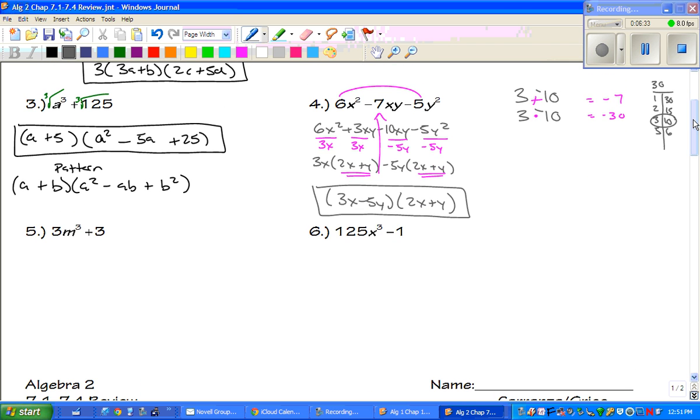Number 5. Is there a GCF? Yes, there is a 3. So, the 3 comes out front and you're left with m cubed plus 1. And once again, this is the difference of the cubes. And we're going to follow the exact same pattern. So, pause the video. You're going to be following that pattern. See if you can figure it out.